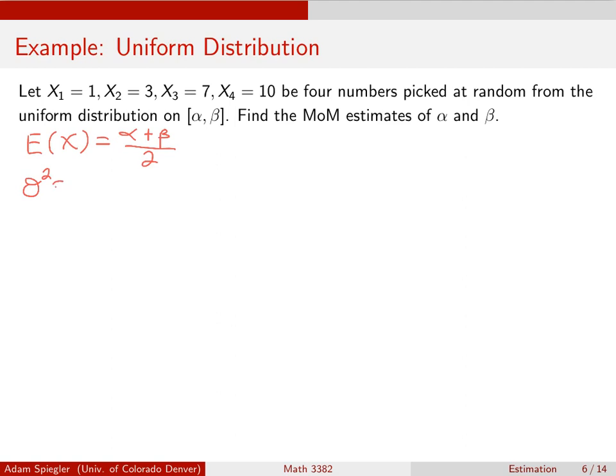And we had a shortcut for the variance for a uniform distribution, namely E(X²) minus the expected value of X squared. And the shortcut for the variance of a uniform distribution is beta minus alpha squared, all divided by 12.